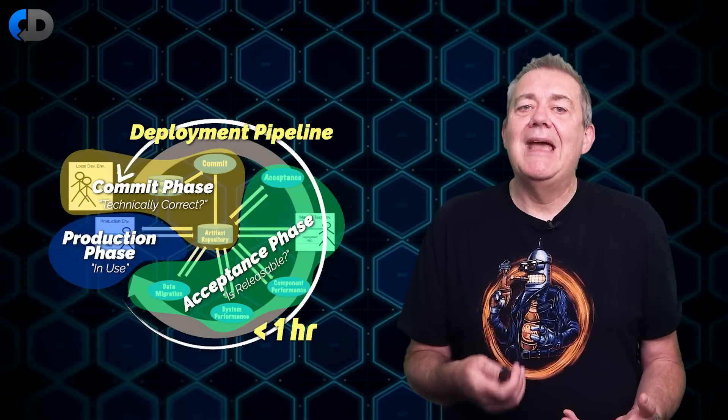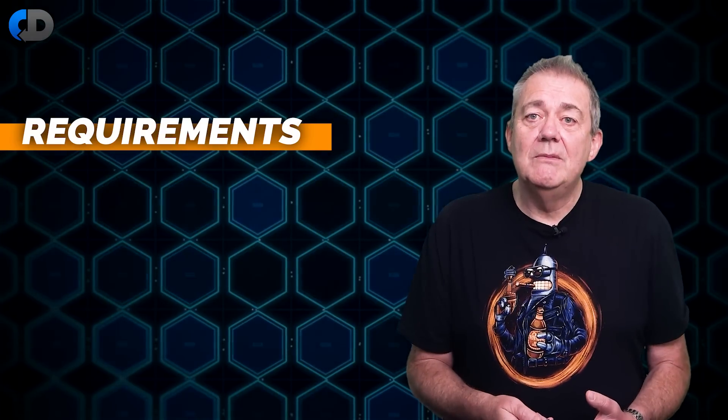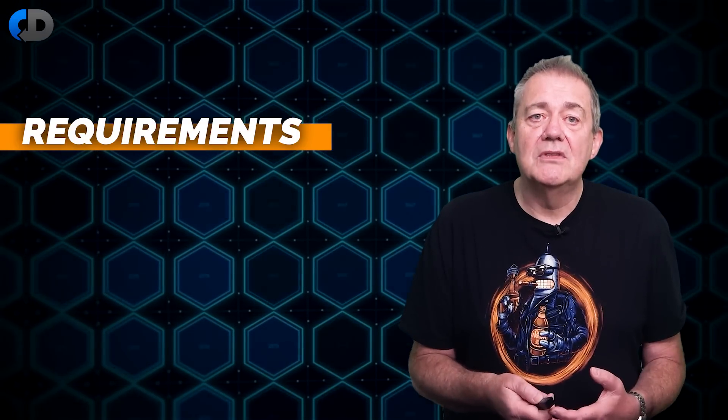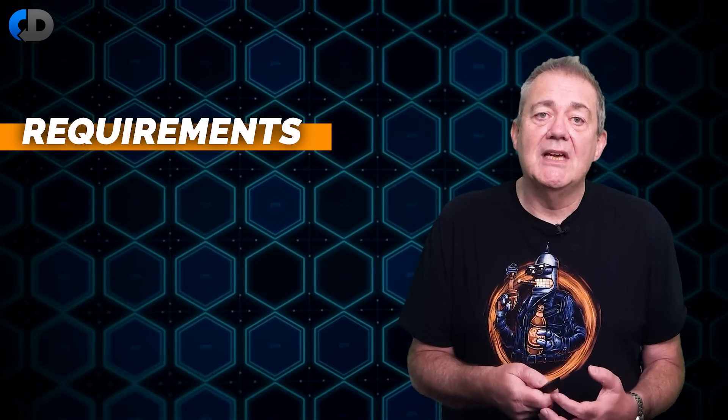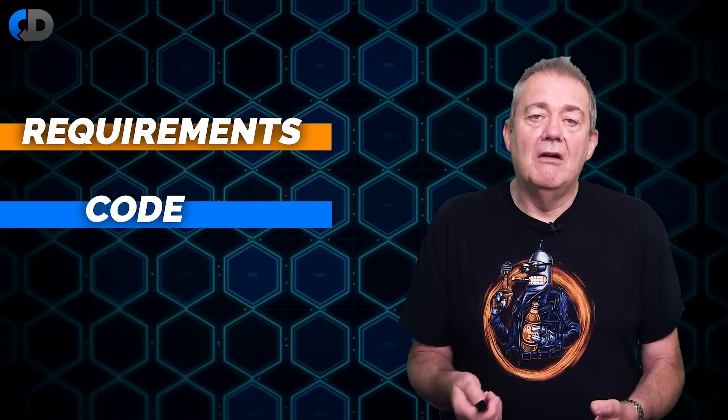If we've been careful in how we define our executable specifications and have kept the clear distinction between what our system does and how it does it then these specifications also document the function of our production system and they're human readable as a side effect of the user focus. So we can automate the generation of things like release notes or support documentation from these specifications. If we ensure that the deployment pipeline is the only route to production for any changes then it also represents the perfect audit trail for those changes.